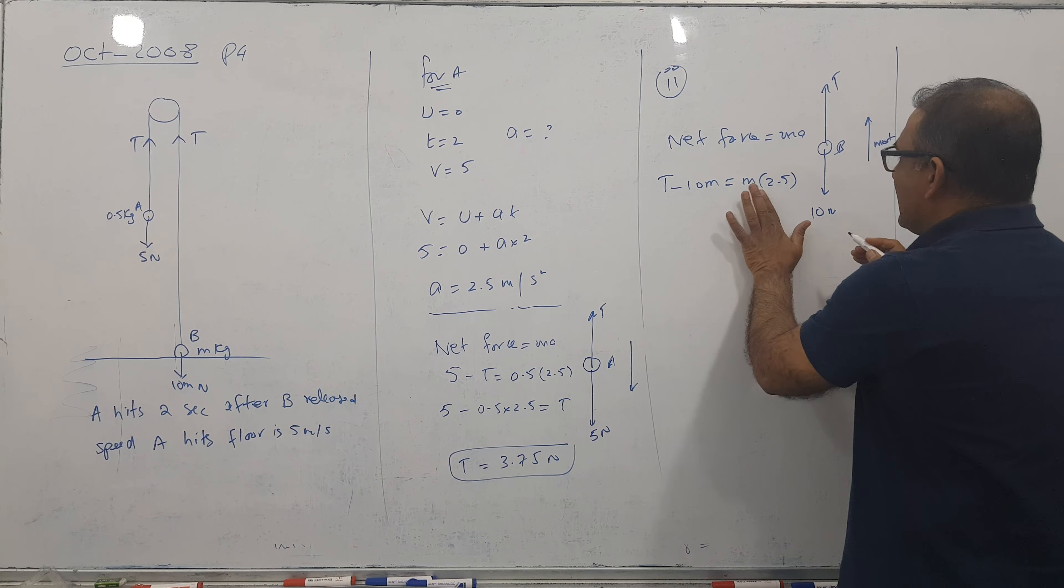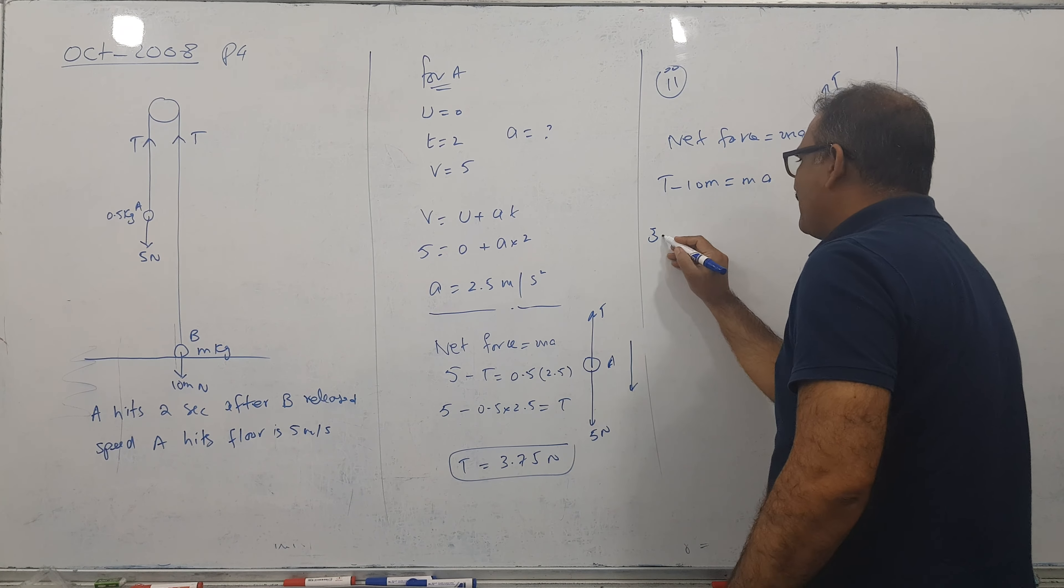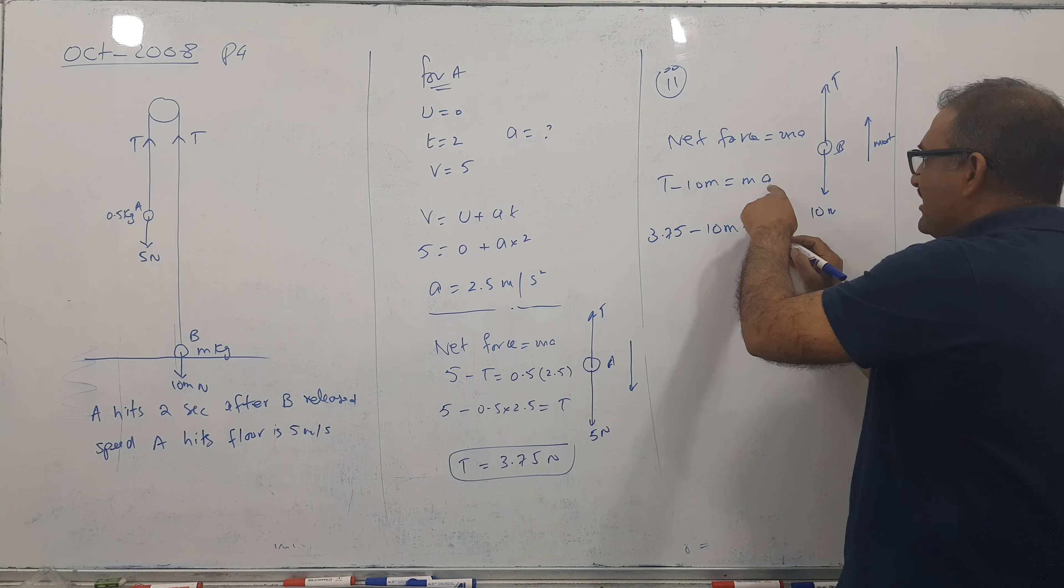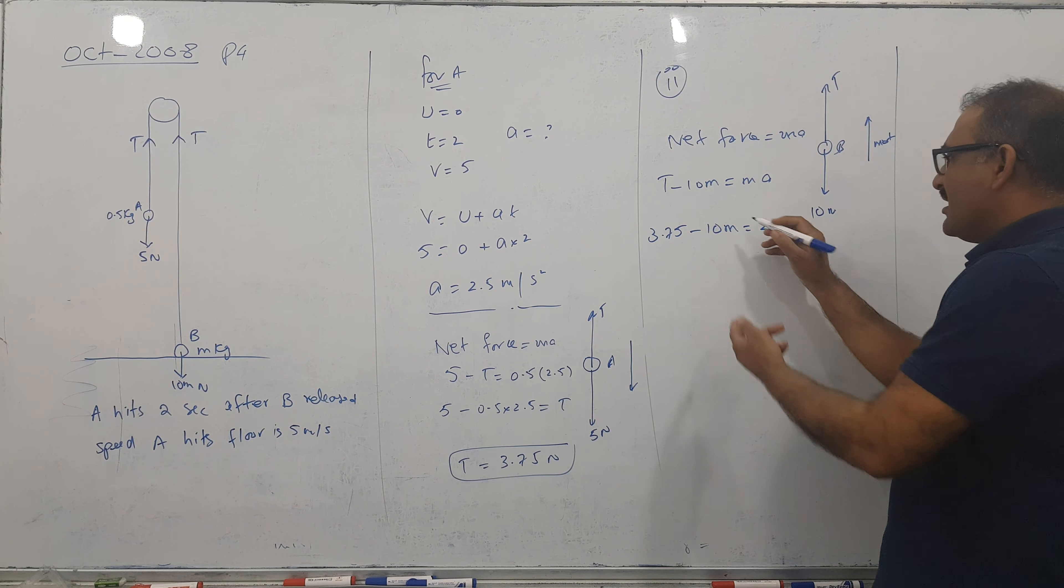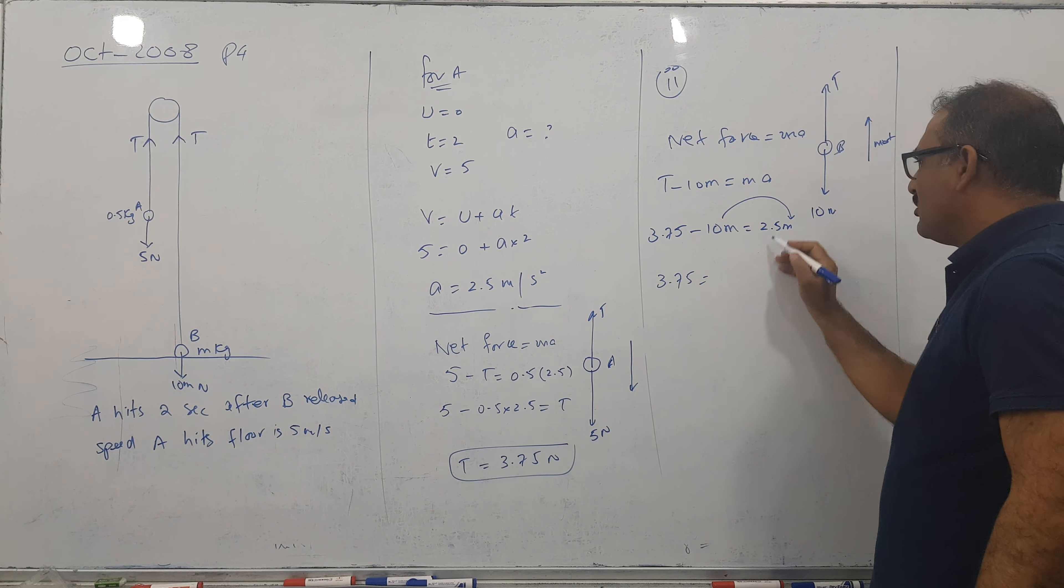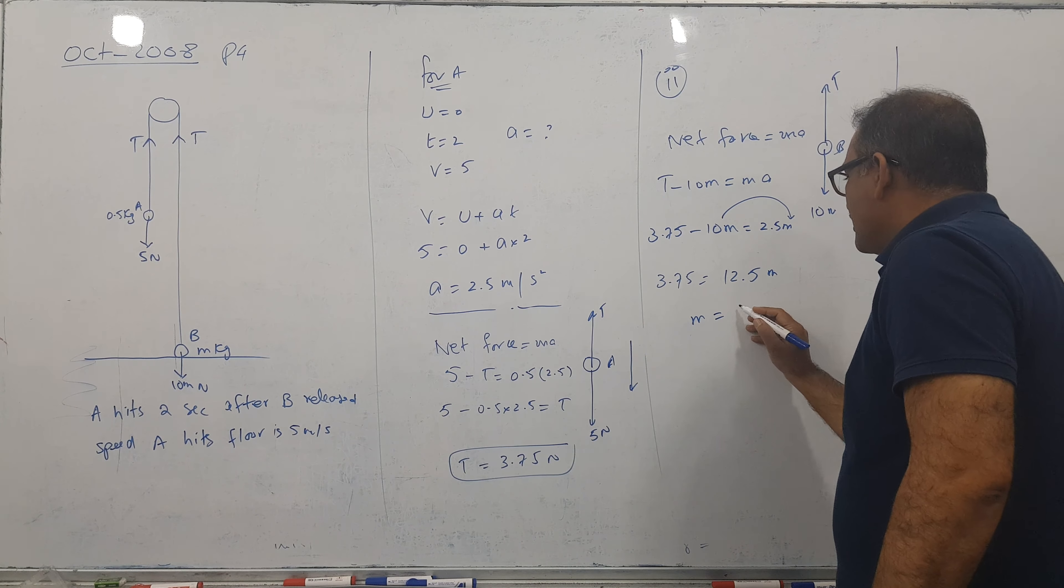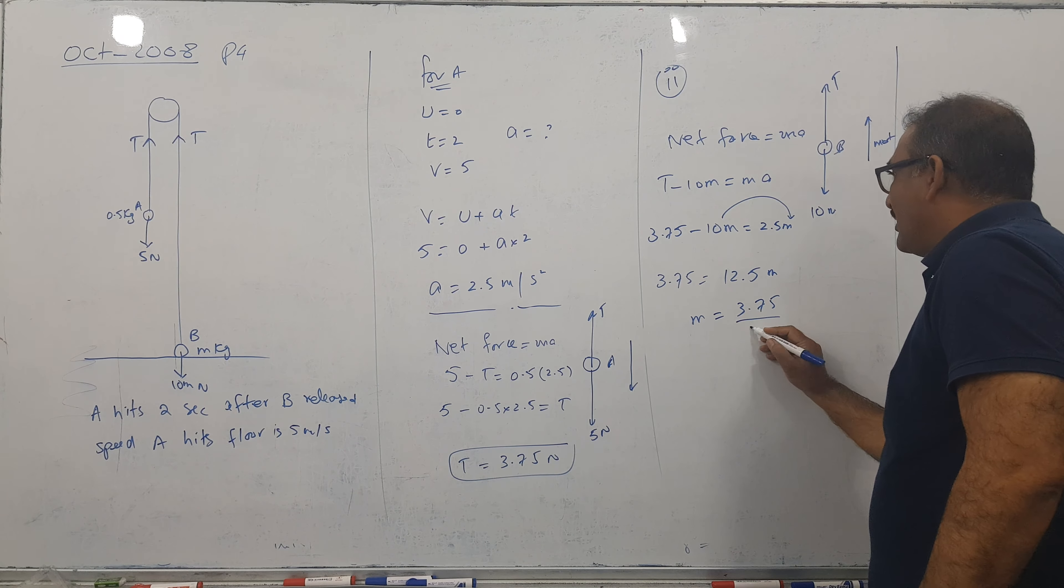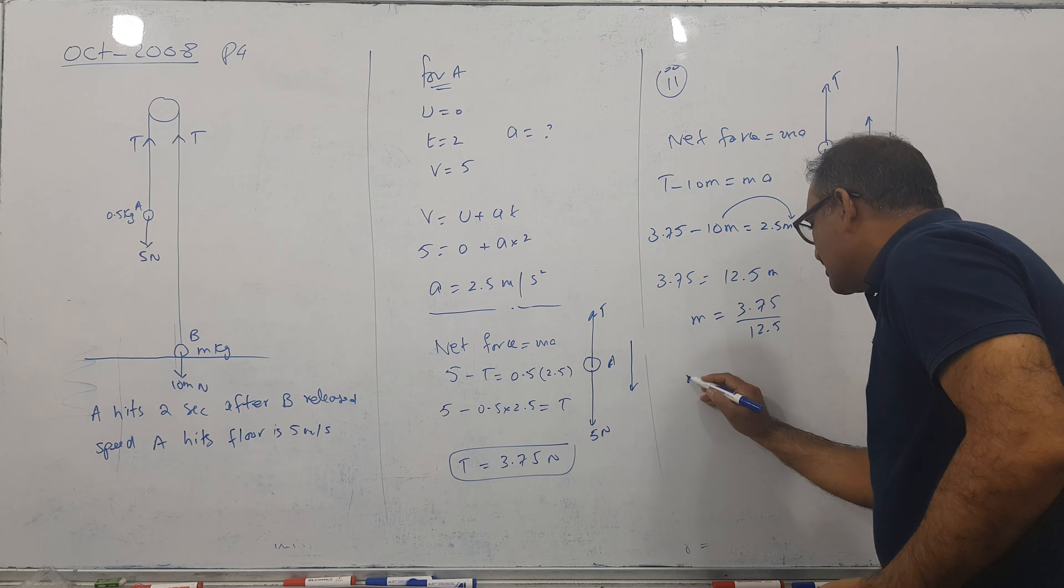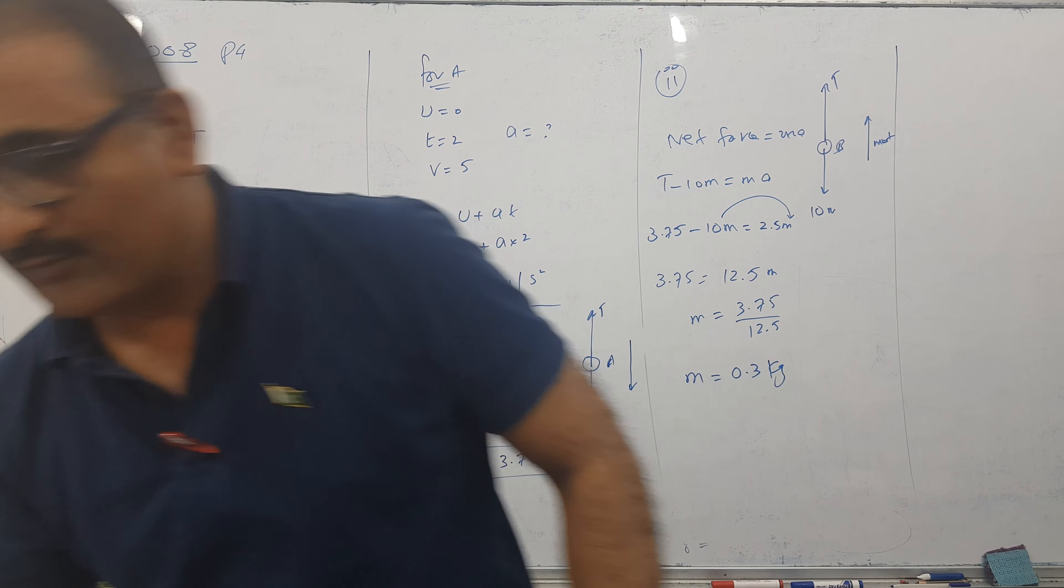Now T is 3.75, 3.75 and 10 times M, and A is 2.5 times M. So I got 3.75 equal to 12.5M. So this M comes 3.75 by 12.5. So M is 0.3 kg and that's it and question is clear, Alhamdulillah.